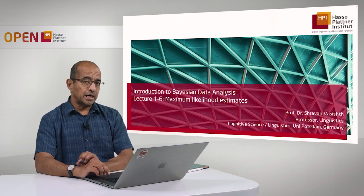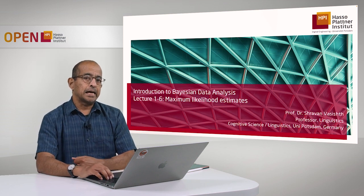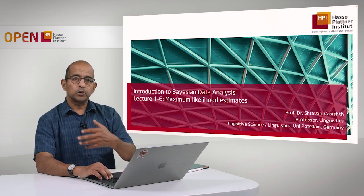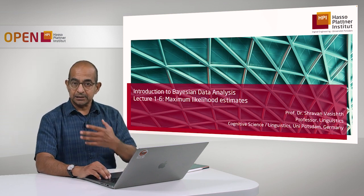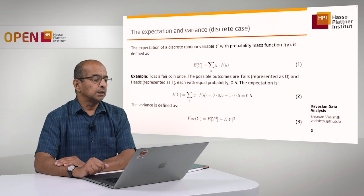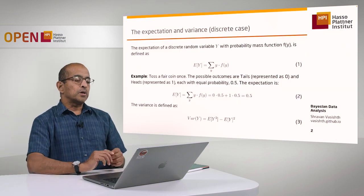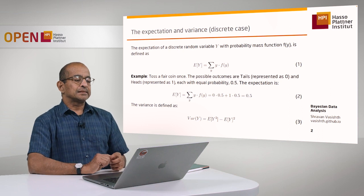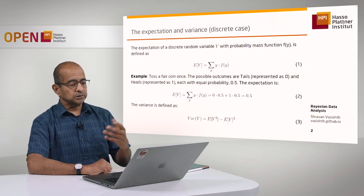What we've seen so far is examples of discrete and continuous random variables, and we know what we can do with these distributions — the kind of questions we can ask of them. Today what I want to talk about is the expectation and variance of a random variable.